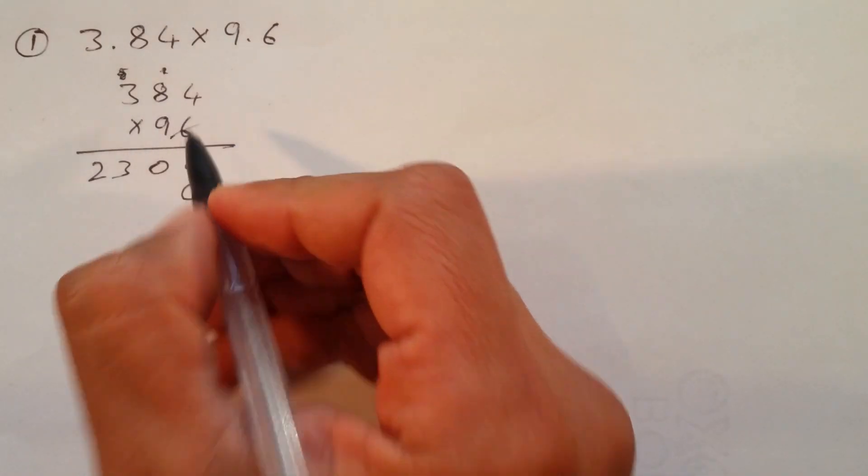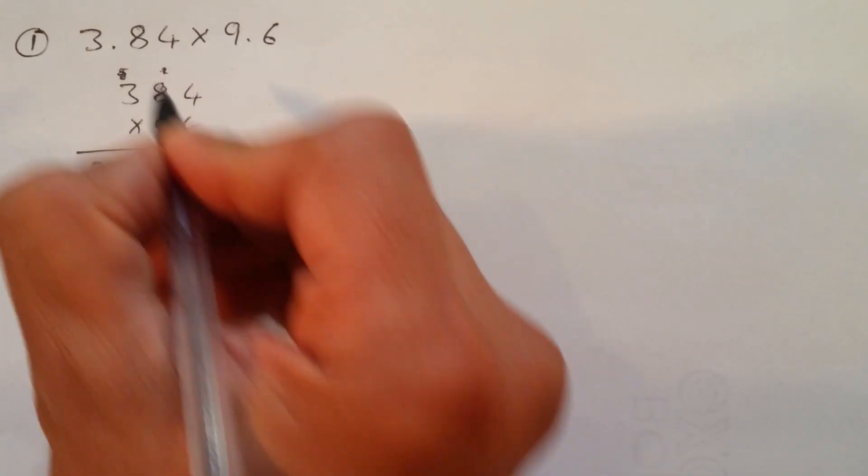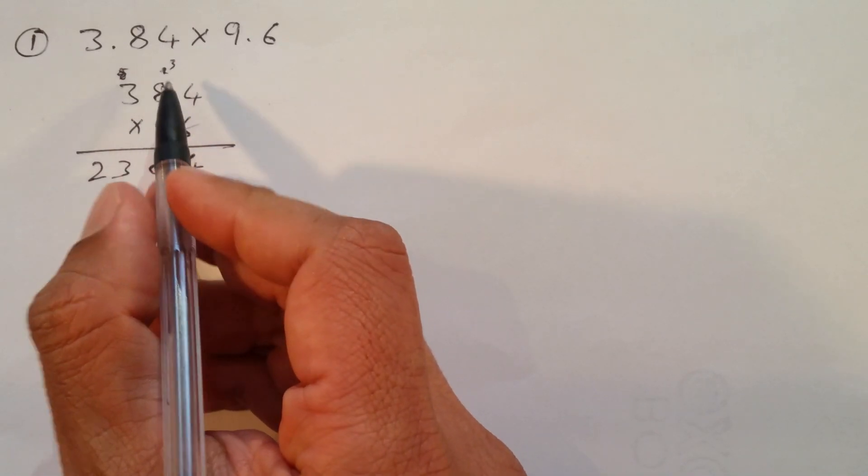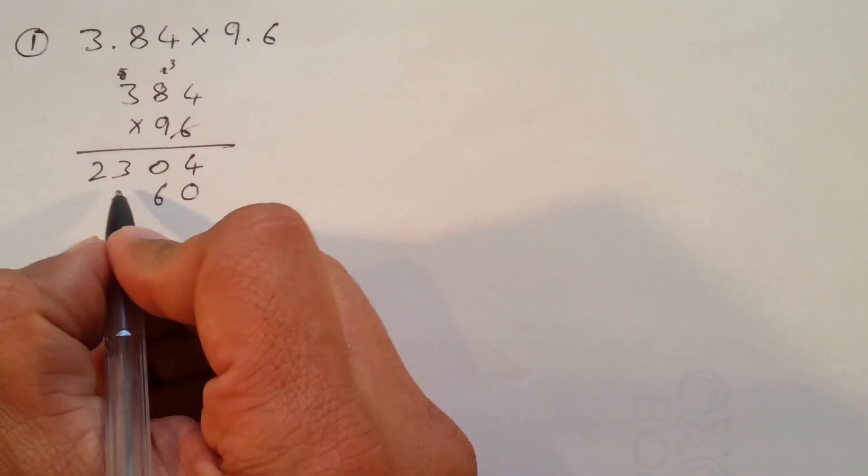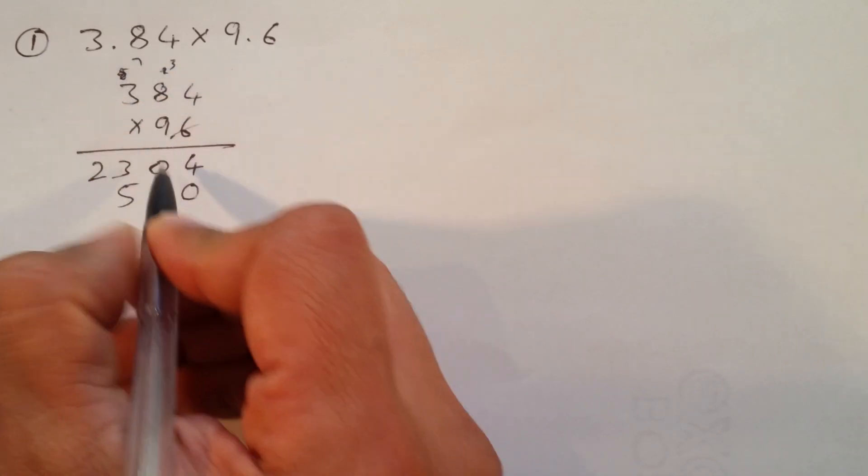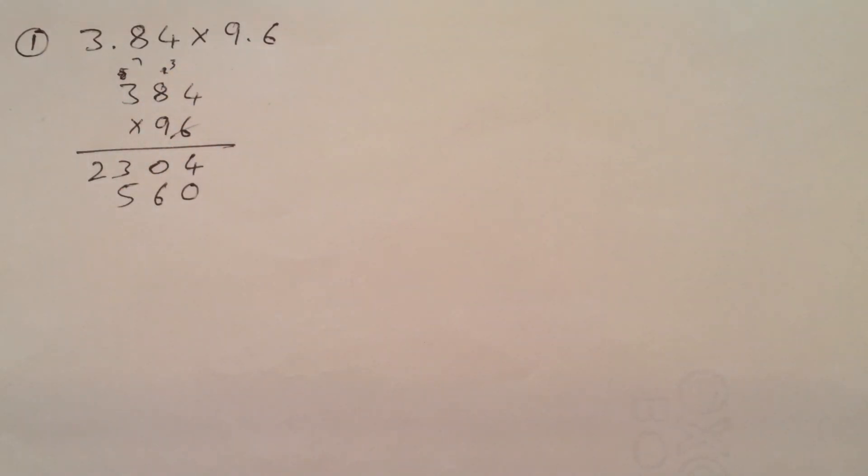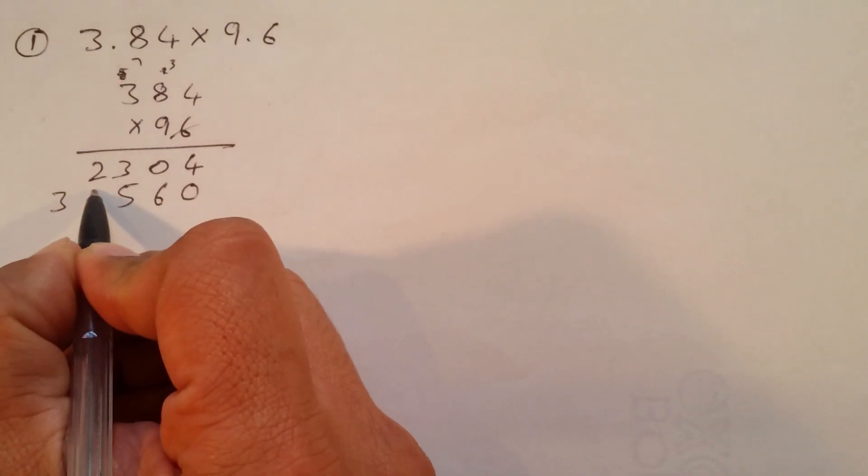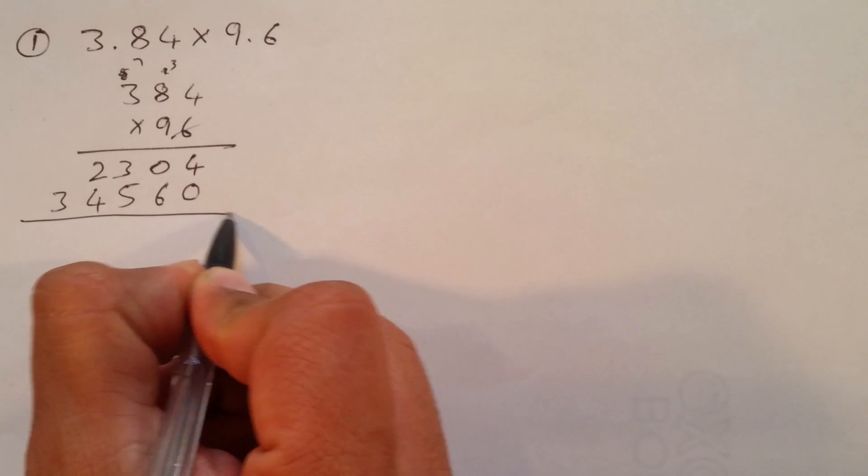So, now start with 9 times 4, 36. Carry 3. 8 times 9, 72. Plus 3, which is 75. 9 times 3 is 27. 7 plus 7, which is 34.